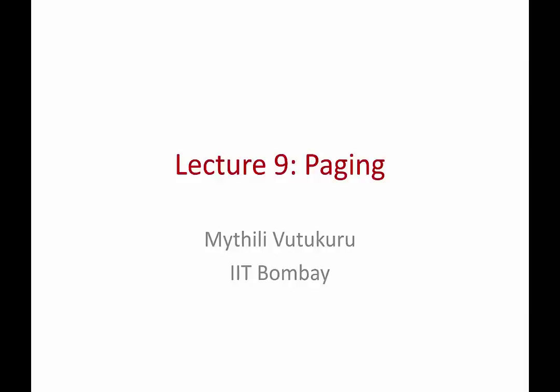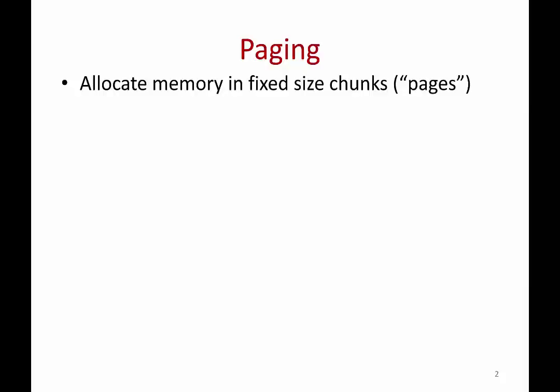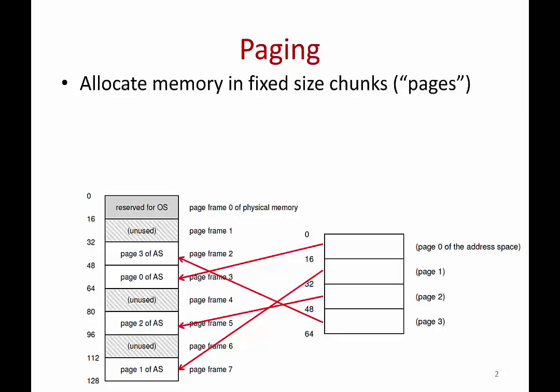In this lecture we are going to study a technique called paging. This is the most common memory management technique used in modern operating systems. In the previous lecture we've seen some simple techniques like base and bound, where the entire memory image of a process was placed as one chunk in main memory. In real life, all modern operating systems use something called paging. You don't allocate all the memory of a process as one chunk. Instead you split up the memory image of a process into fixed size chunks called pages.